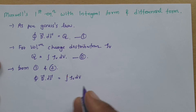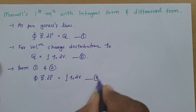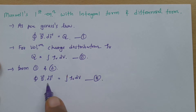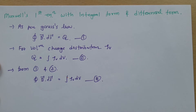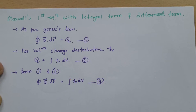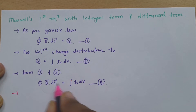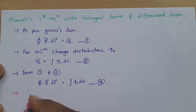This is the integral form of Maxwell's first equation. This equation A is the integral form of Maxwell's first equation.